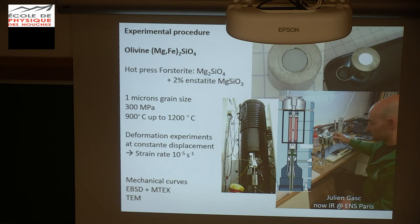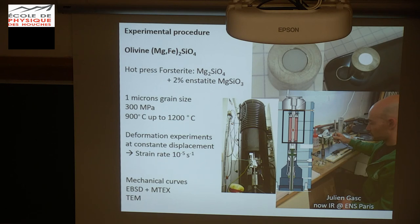This is to buffer the silica activity and not to generate too many vacancies. It's very small grains — in my world, small means microns — and we're going to deform those hot-pressed dense forsterite aggregates under a confining pressure of 300 MPa and temperature between 900 and 1200 degrees Celsius. We compress them in axial compression with a constant displacement rate, giving a strain rate of 10⁻⁵ per second. This is fast — corresponding to one experiment per day. Of course, this is not the case in the Earth, where the strain rate is between 10⁻¹⁶ and 10⁻¹² per second, which isn't compatible with any PhD.